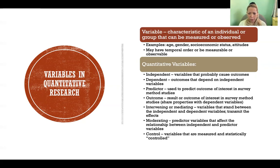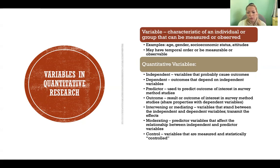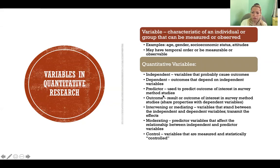A moderating variable is a predictor variable that affects the relationship between the independent and other predictor variables — it is moderating that relationship. Control refers to variables that are measured and statistically controlled. If there are variables that we think might affect the dependent variable, we can statistically control for their effects to see the true effect of the independent variable when we remove the influence of that controlled variable.